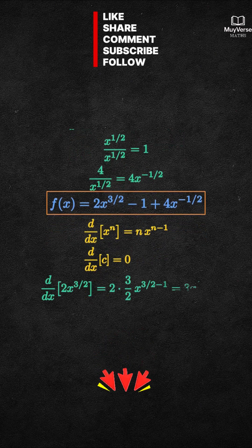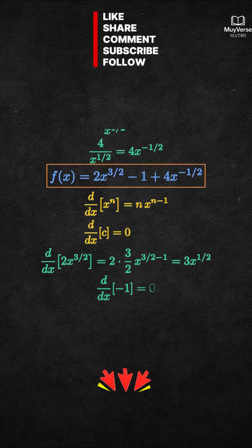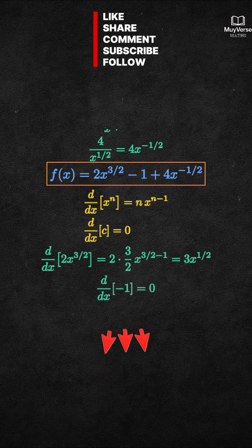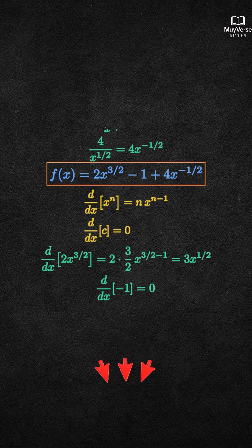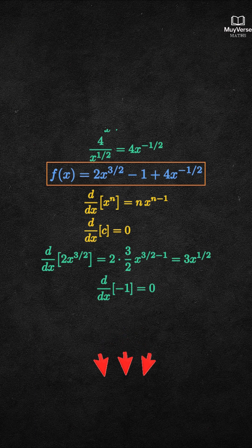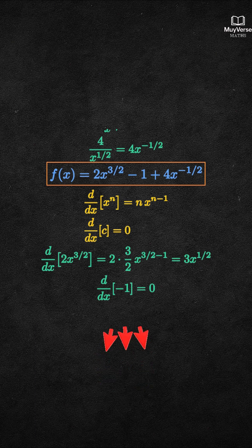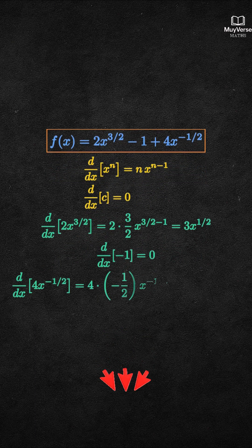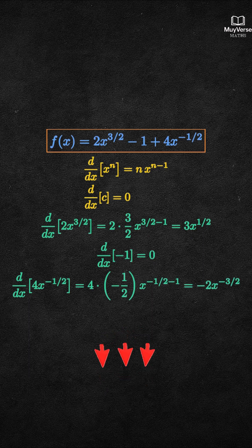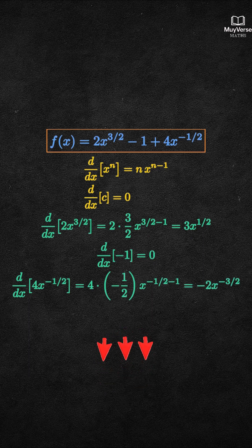Differentiating the constant negative 1 gives 0. Differentiating 4x to the negative 1 half gives 4 times negative 1 half times x to the negative 3 halves, which simplifies to negative 2x to the negative 3 halves. Combining the pieces gives f prime of x equals 3x to the 1 half minus 2x to the negative 3 halves.